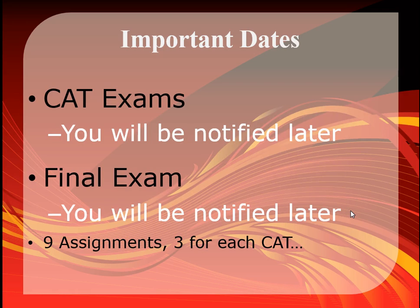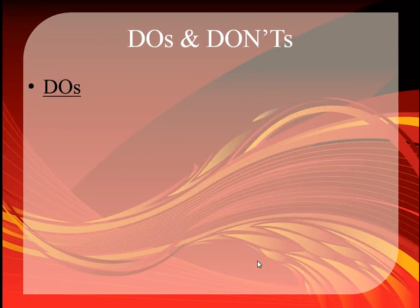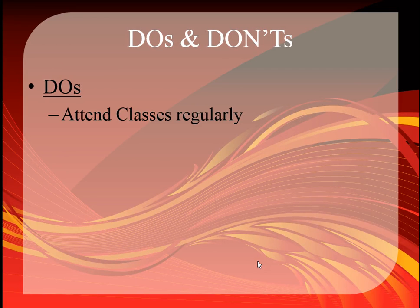There are nine assignments — three for each continuous assessment exam. CAT exam dates will be notified. Assignments are not just to test you but to help you prepare, understand, and develop ideas related to the subject matter.